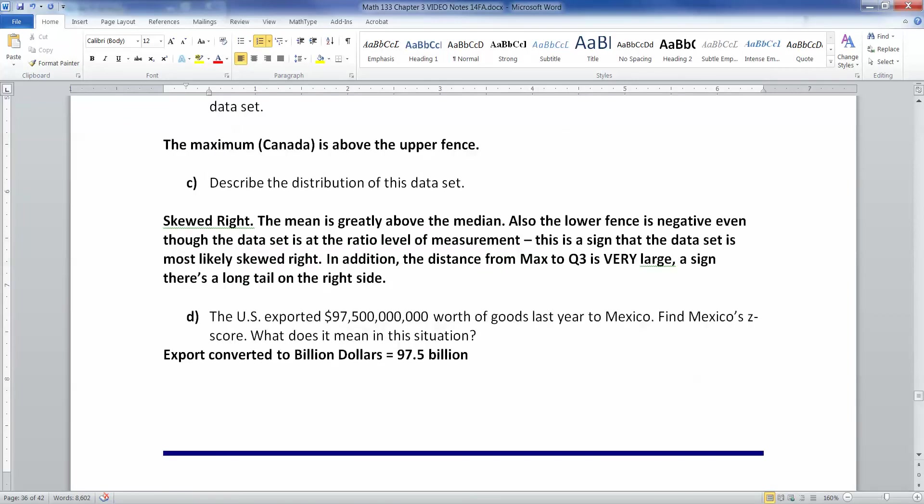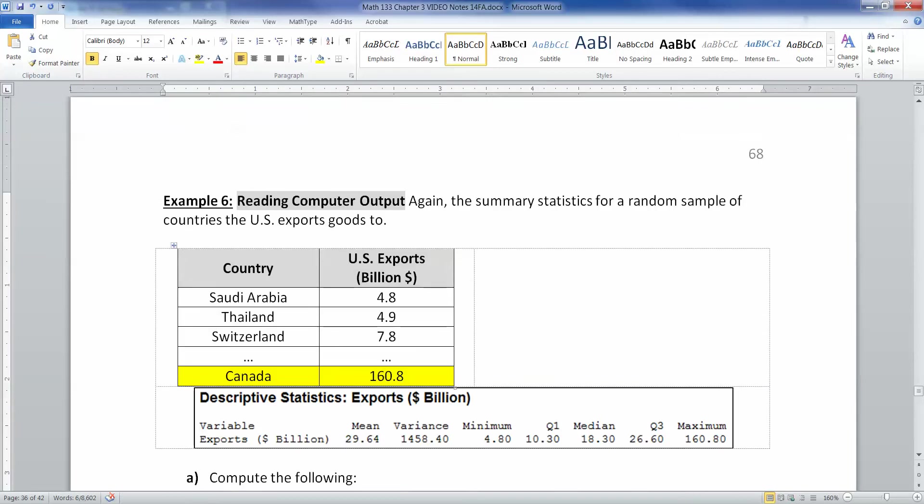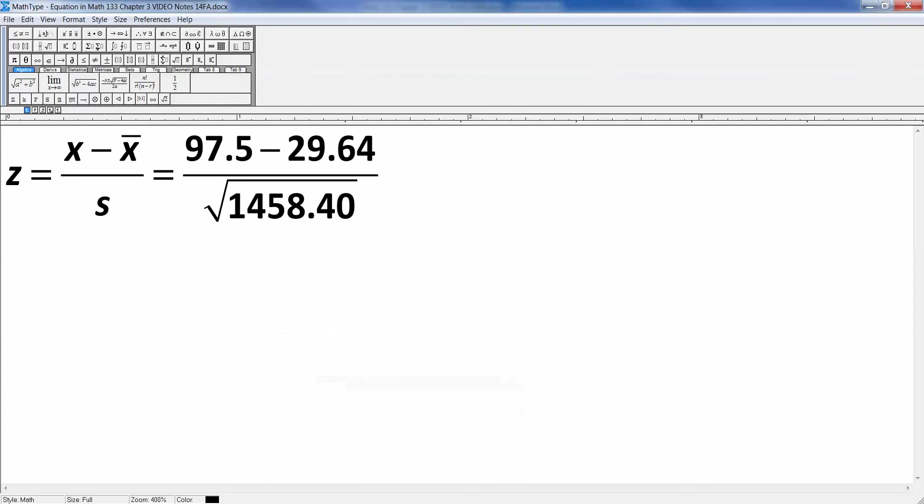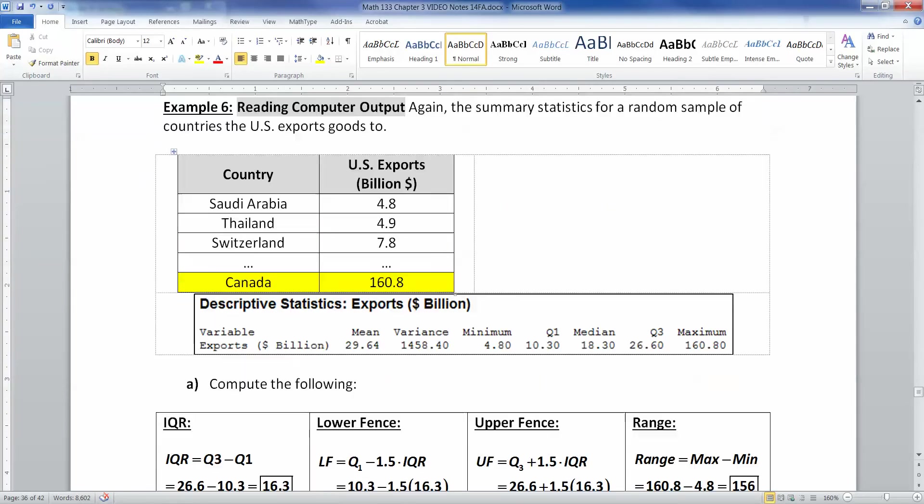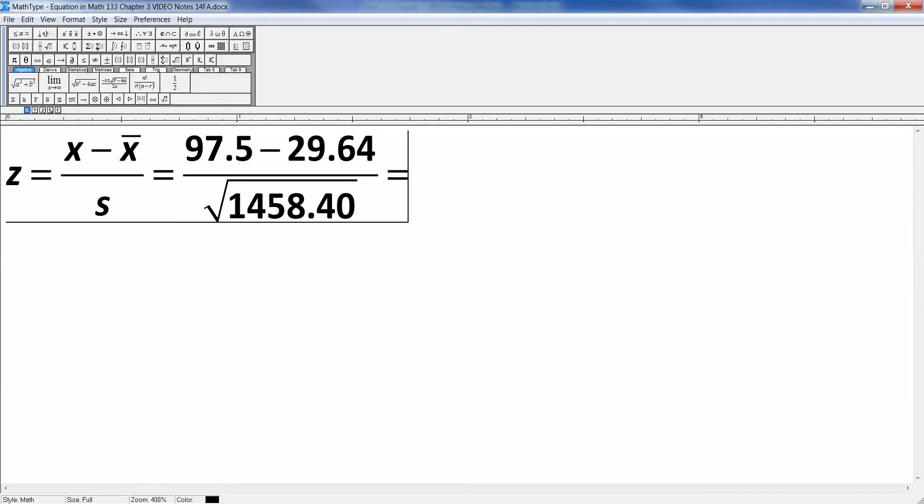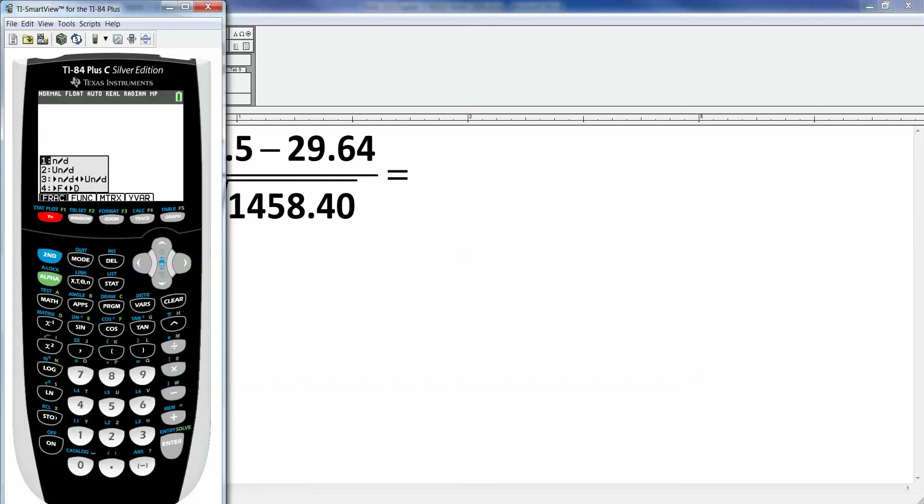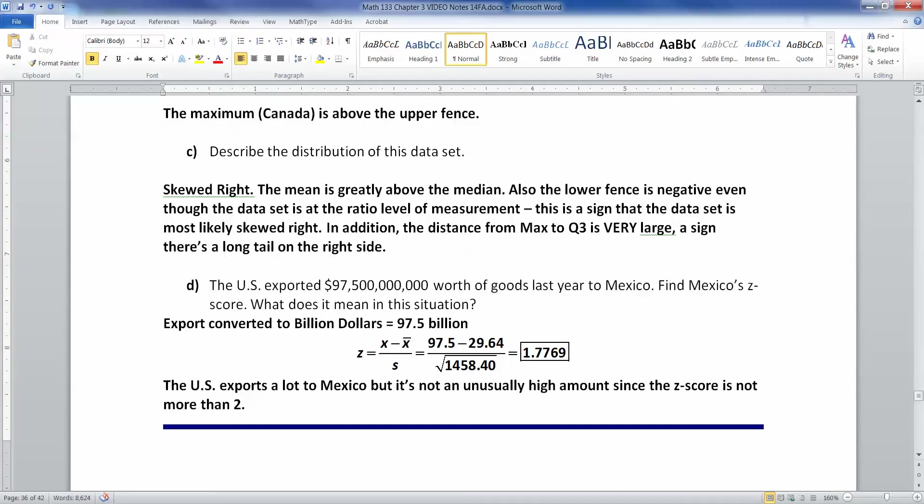All right, last but not least, we need to find the Z-score for Mexico. So Mexico is at $97,500,000,000, so we need to convert that to $1,000,000,000, because that's the unit we have up here. So that's $97.5 billion. Then the Z-score would be X minus X-bar, which is $97.5 minus 29.64, over S. But the data set didn't give us S. They gave us variance, which is 1458.4. But remember, the variance is the standard deviation squared, so I just need to do this calculation right here. So we grab the calculator, alpha F1, and then we pick number 1, and let me type these values in. So I've got that numerator typed in. Down here, I want to hit 2nd, X-squared to get that square root, 1458.4, enter. And then I press Enter, and I get 1.7769. This means that the U.S. exports a lot to Mexico because it's a high number, but not an unusual amount because it's not more than 2.